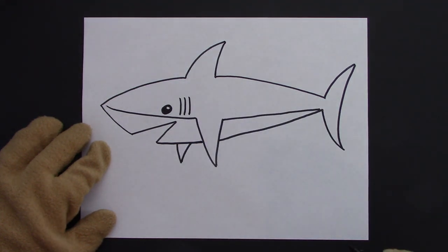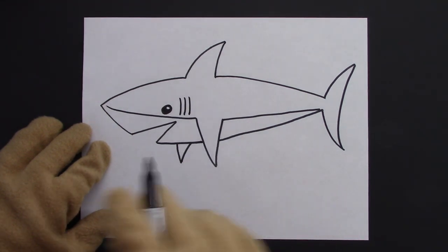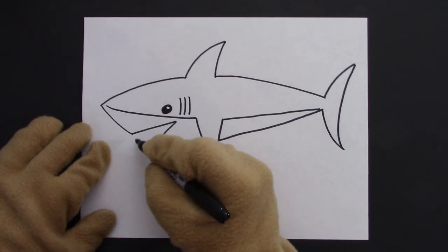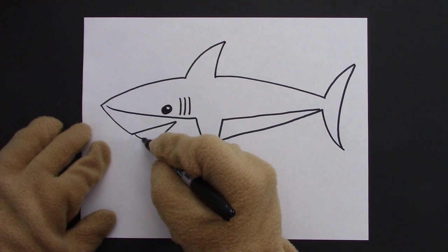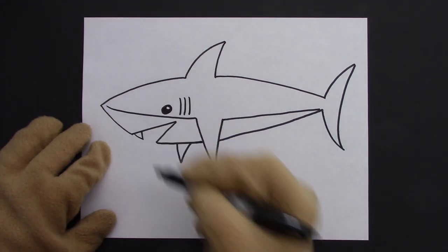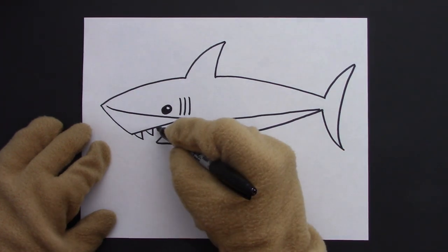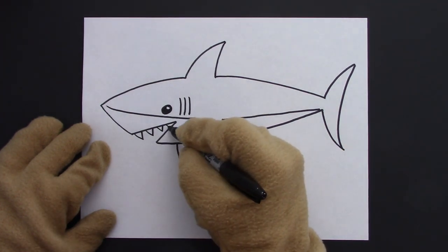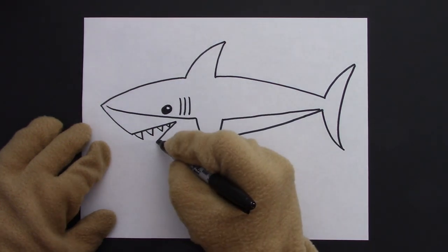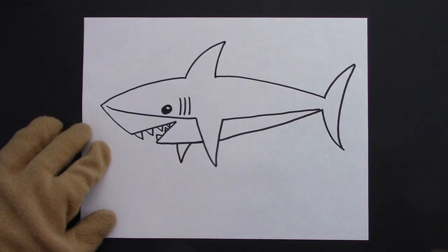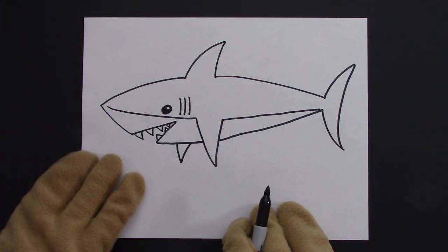Now for the teeth. So let's draw some triangles. One, two, and get smaller as they go back. Three, four. Some on the bottom. One, two. And there's our shark! Good job!